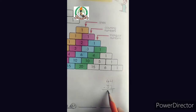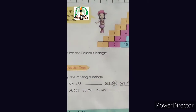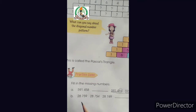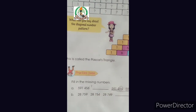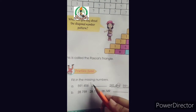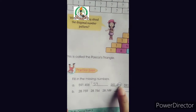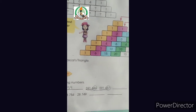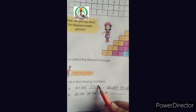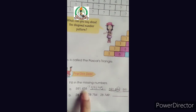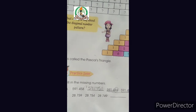So the difference between these two numbers is 7. If we subtract 7 from each number, we will find the missing number. Like 591,458 — if we do minus 7, we get: 58 minus 7 is 51. So the missing number is 591,451.